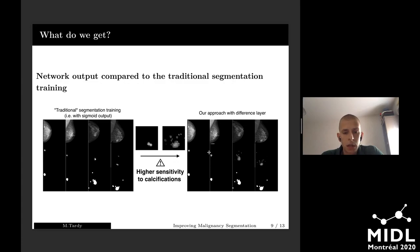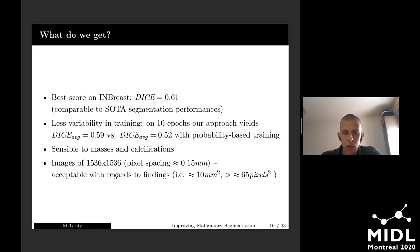we obtain a result that does not need any kind of post-processing to be interpretable. Our numbers are comparable to state-of-the-art, especially noting that we have higher resolution images and both masses and calcifications. One interesting thing is that our training is actually much smoother compared to probability-based training.